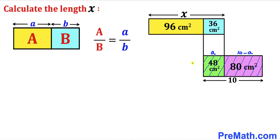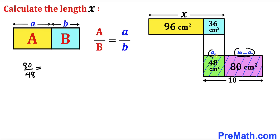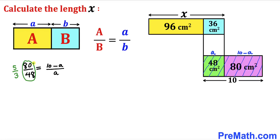We apply this concept here. Both the green and purple rectangles have the same height, so the ratio of their areas gives us 80 divided by 48 equals (10 minus a) divided by a. Simplifying the left side by dividing both by 16 gives us 5 divided by 3, so 5/3 = (10 − a)/a.